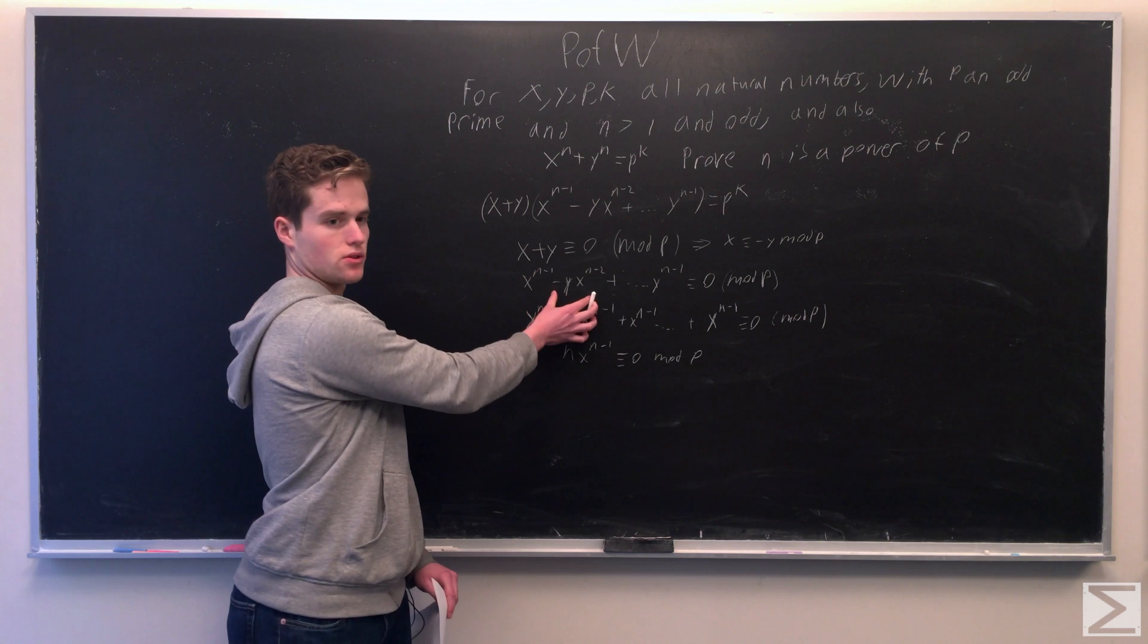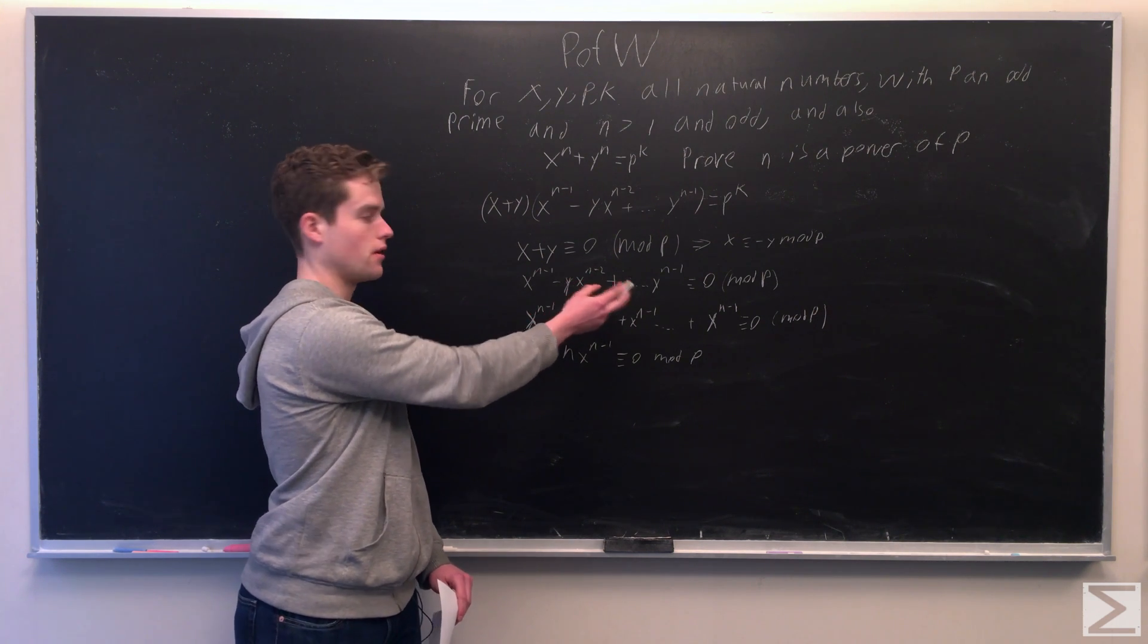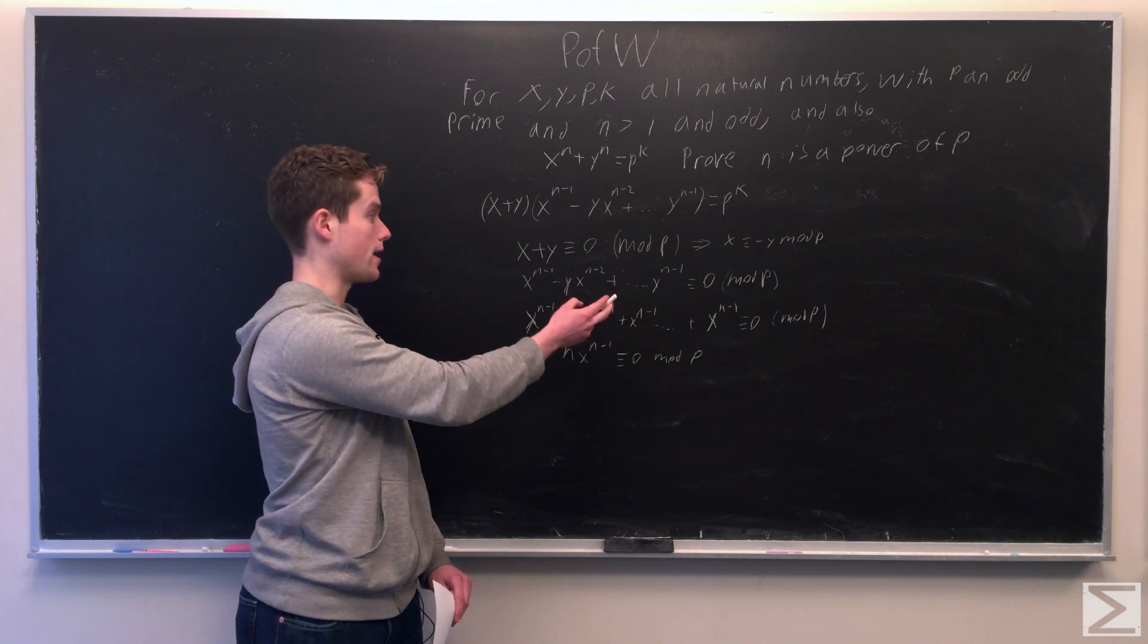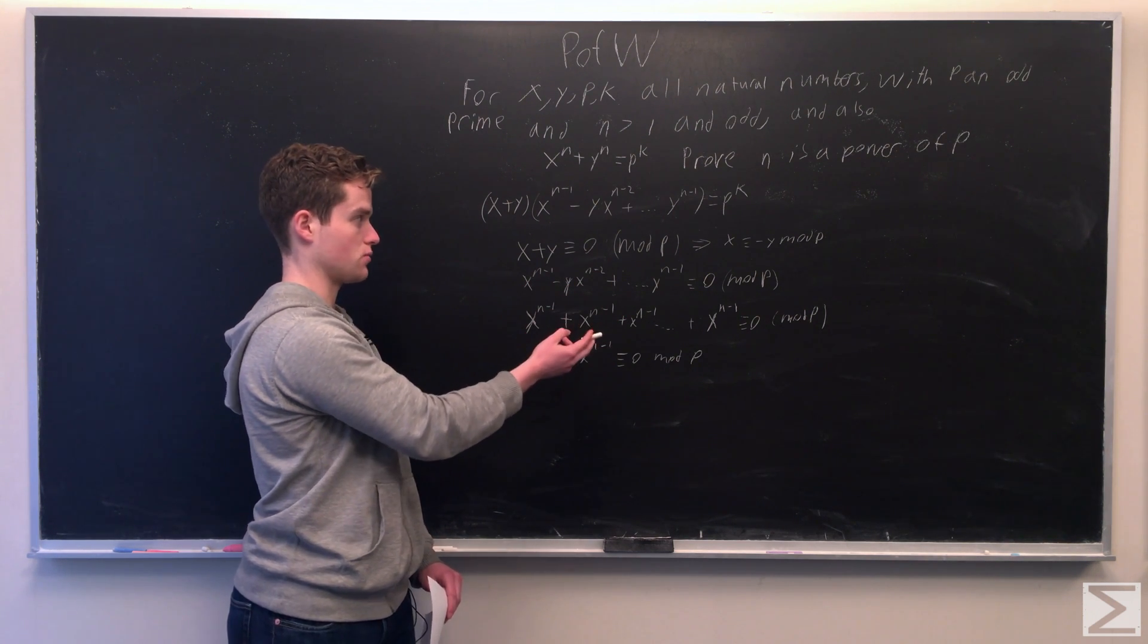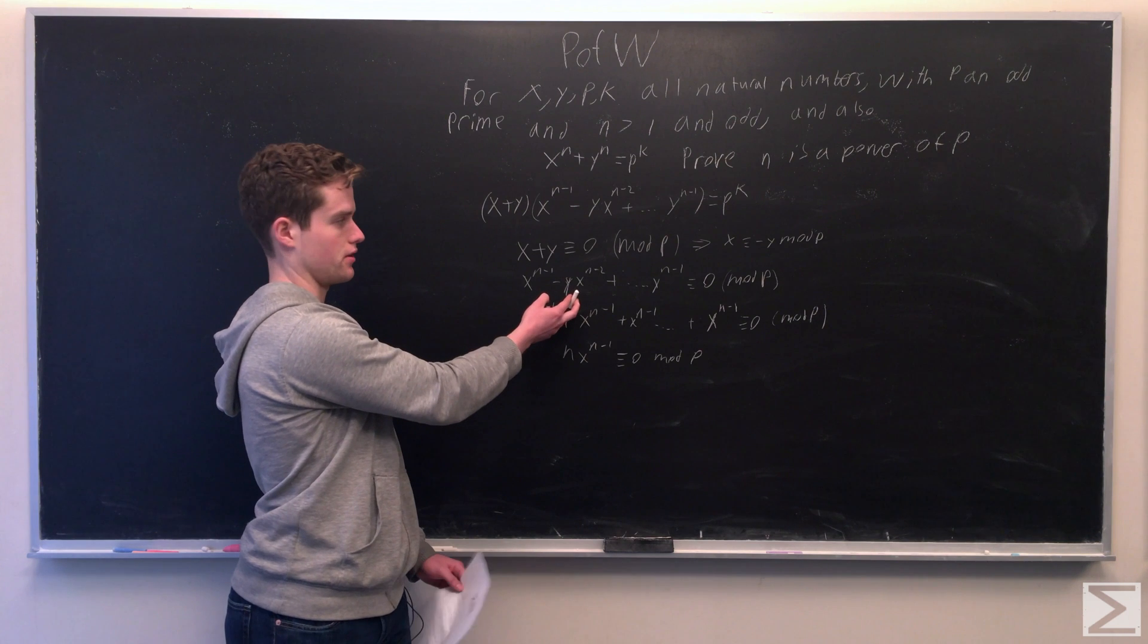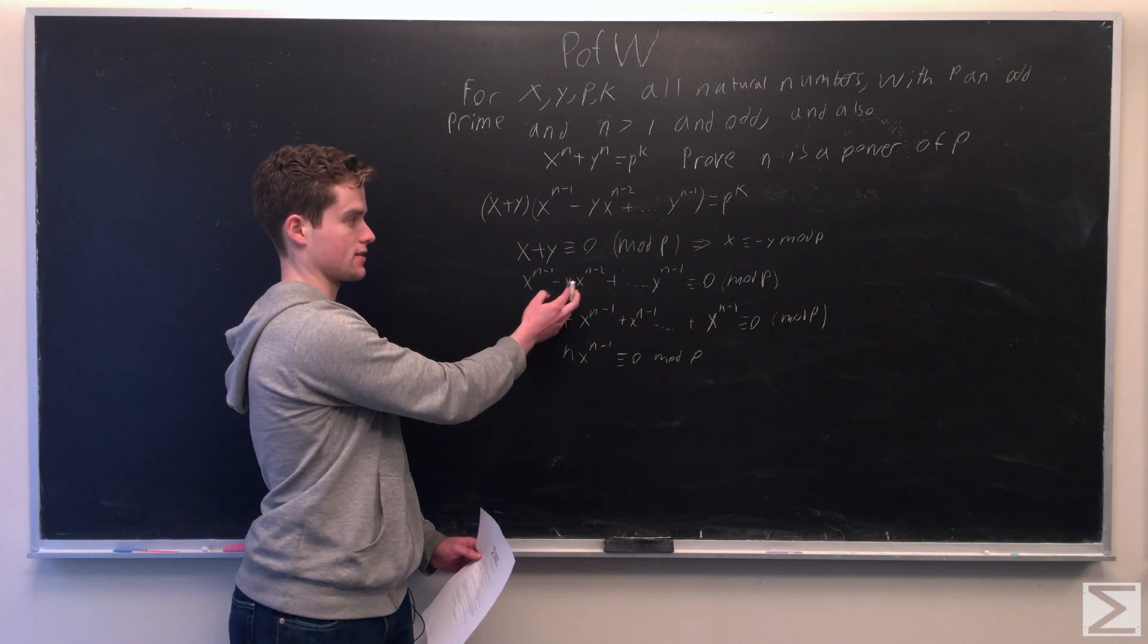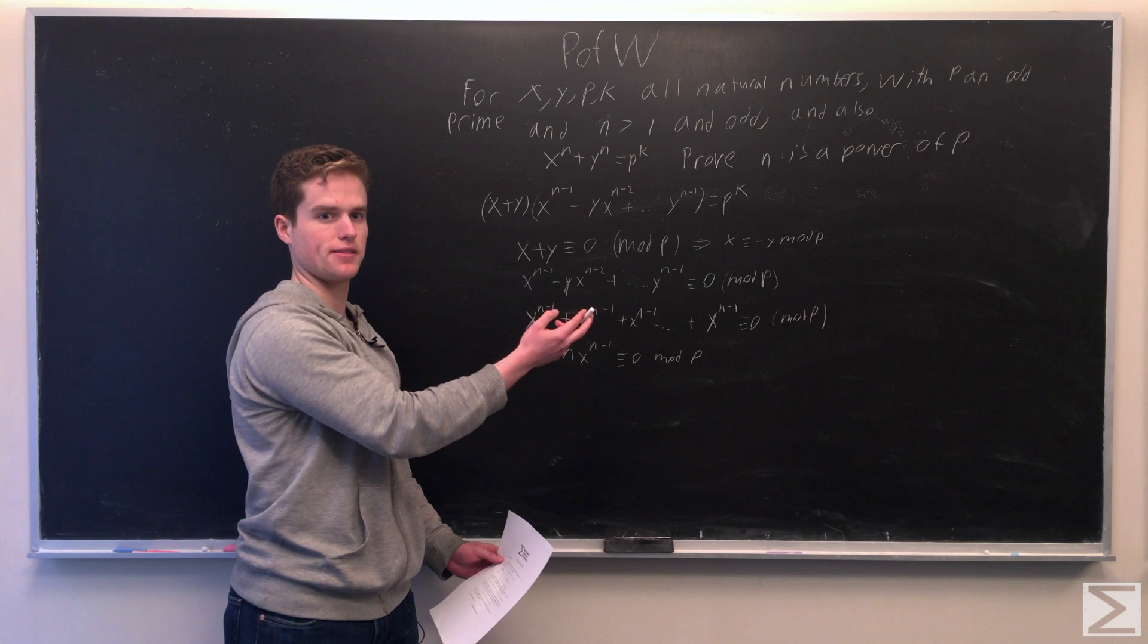each of these individual terms, like minus y, x to the n minus 2, plus y squared, x to the n minus 3, all these terms are just going to be congruent to x to the n minus 1, because if we plug in minus x for y, we get x times x to the n minus 2, which is x to the n minus 1.